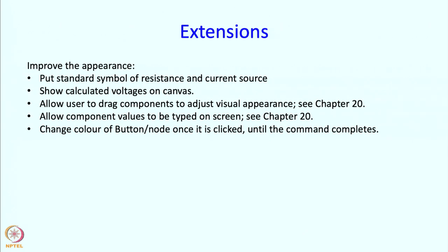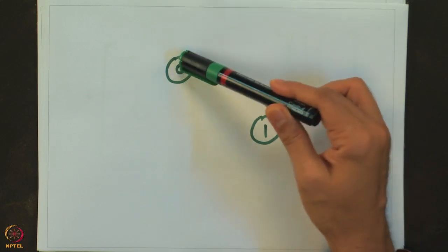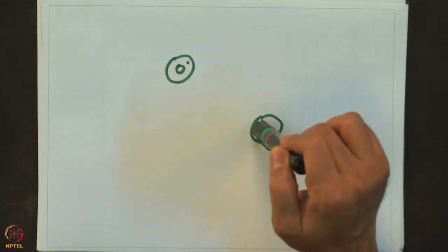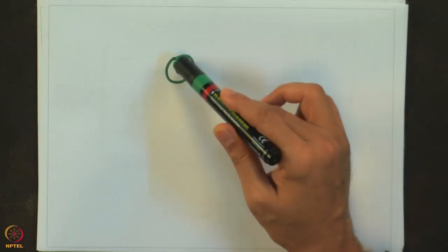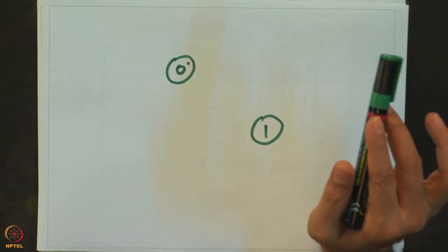That is not hard — it is just a matter of detail and I certainly suggest this is one of the extensions you should try out. If I am selecting a node to add a conductance, I first click on it, then click on the other node, and the color should change. But the color should go back to the original once the entire operation has been finished. This is a good exercise for you.